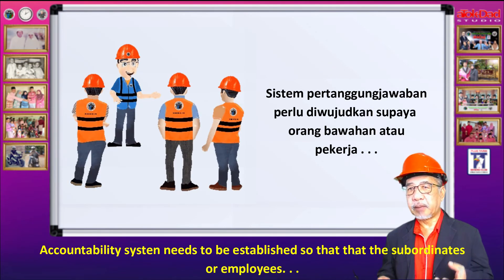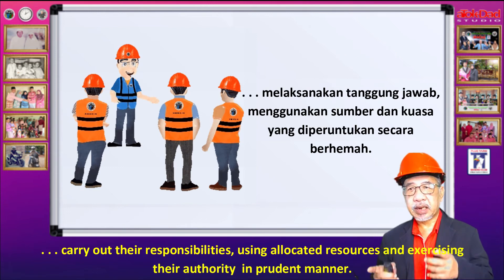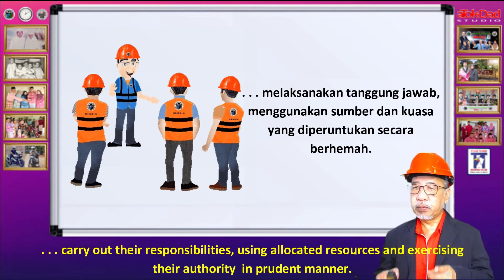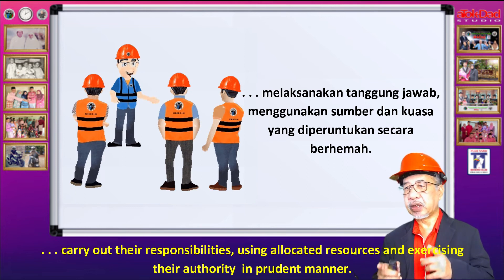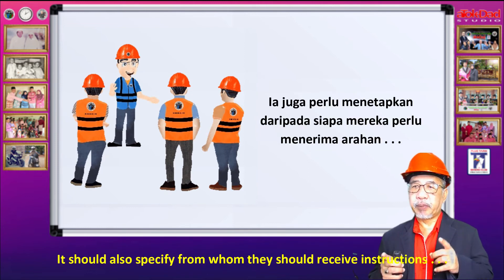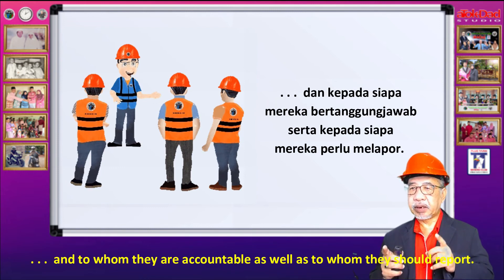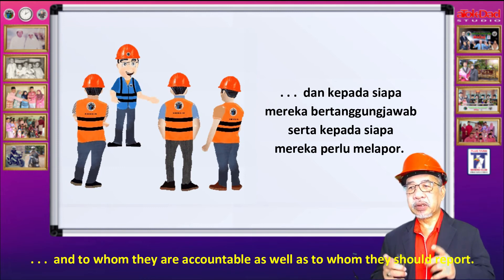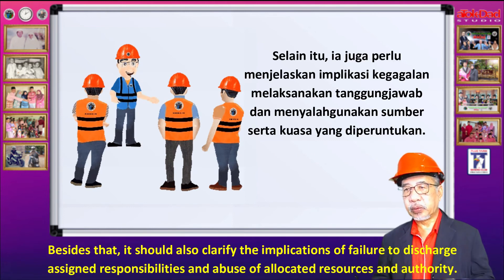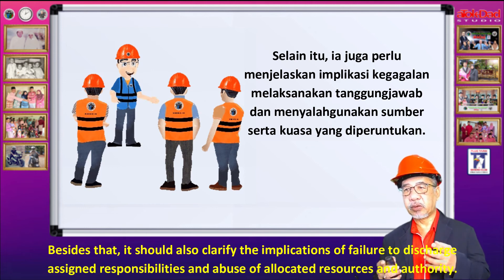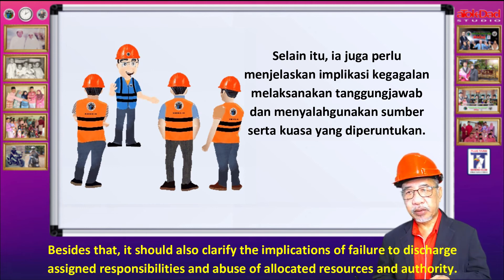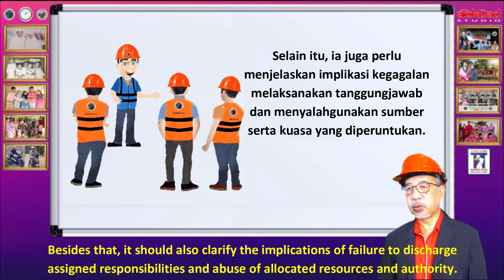Sistem pertanggungjawab perlu diwujudkan supaya orang bawahan atau pekerja melaksanakan tanggungjawab menggunakan sumber dan kuasa yang diperlukan secara bertanggungjawab. Ia juga perlu menetapkan daripada siapa mereka perlu menerima arahan dan kepada siapa mereka bertanggungjawab serta kepada siapa mereka perlu melapor. Selain itu, ia juga perlu menjelaskan implikasi kegagalan melaksanakan tanggungjawab dan menyalahgunakan sumber serta kuasa yang diperuntukkan.